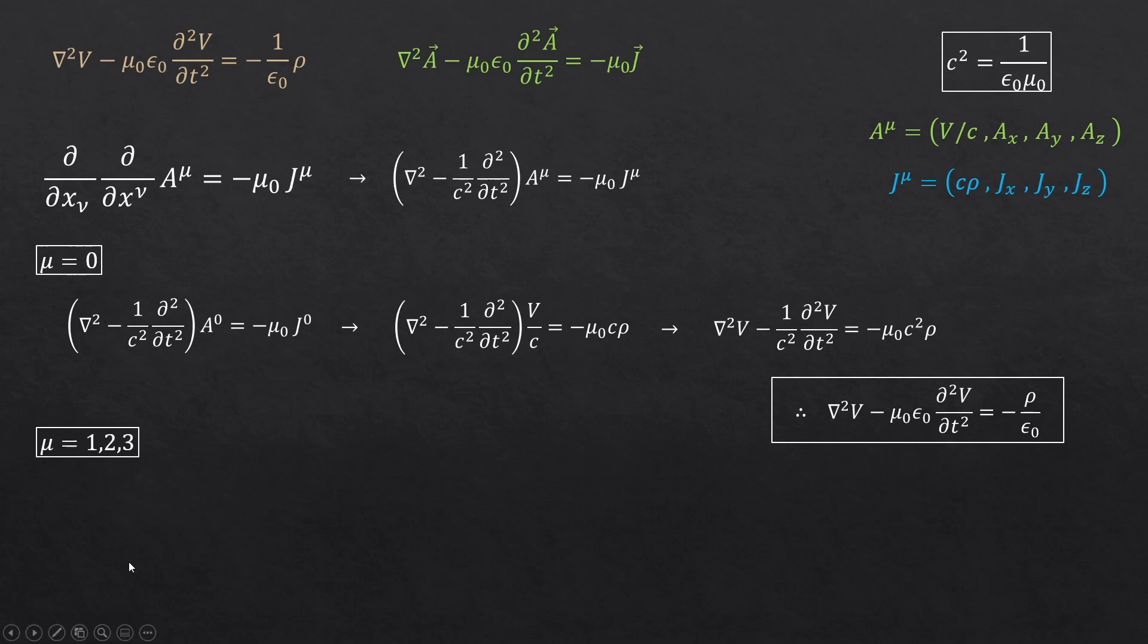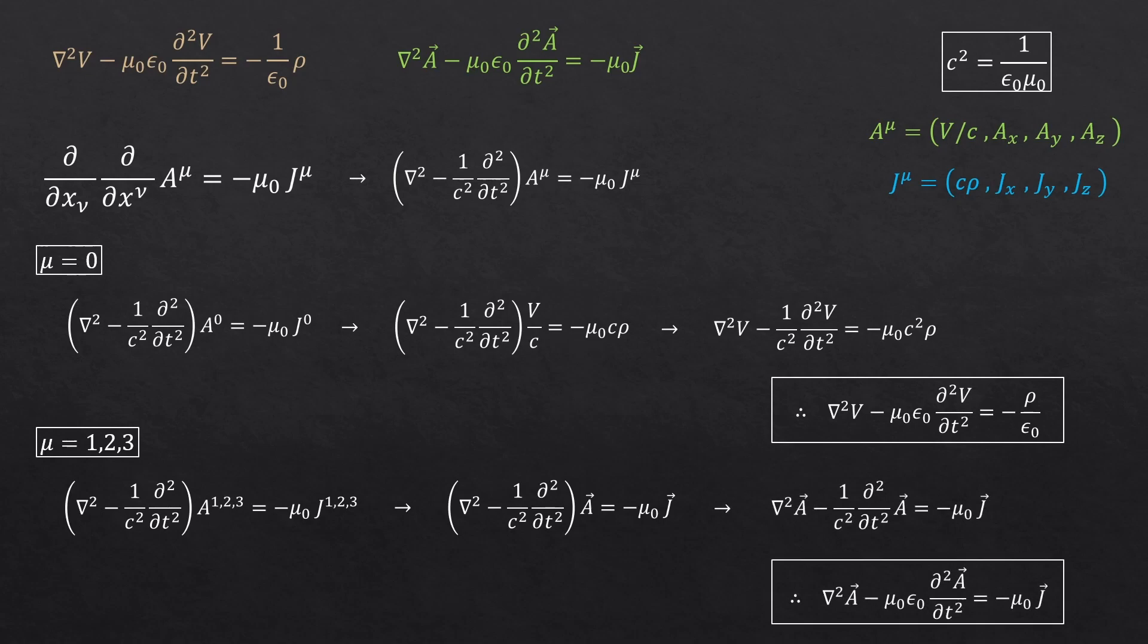Now let's look at the case when mu is equal to 1, 2, and 3. These are just x, y, and z components, so I'll just consider them all at once. What do we get? This is precisely our other new Maxwell's equation.